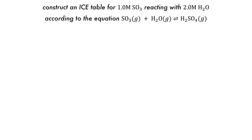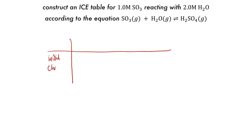The first step is to form our basic ICE table with a horizontal line and a vertical line. On the left-hand side we put the values for initial, change, and equilibrium. Then at the top we put our equilibrium equation: SO3 plus H2O is in equilibrium with H2SO4.